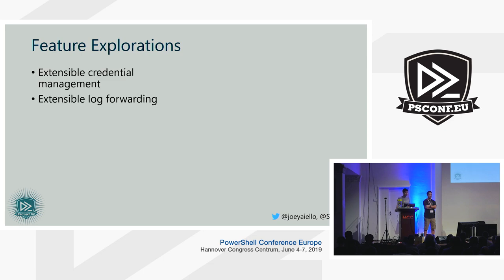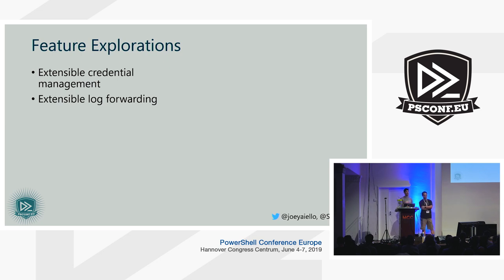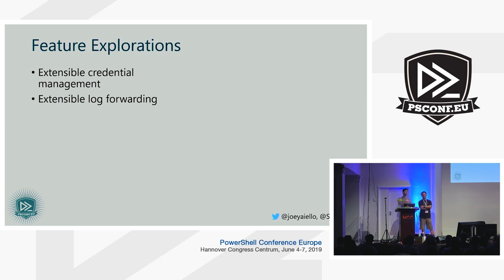The first two are extensible credential management and extensible log forwarding — we could offer an extension model. In PowerShell we are marshalling credentials between applications — we have the idea of a secure string and a PS credential. But we're increasingly interfacing with third-party services like Azure Key Vault, HashiCorp Vault, AWS, and GCP offerings. A lot of people struggle with key rotations and mirroring vaults between multiple services.